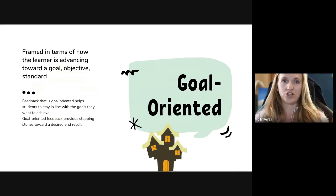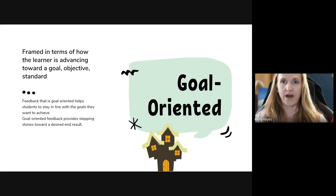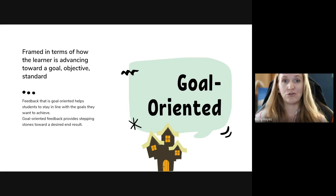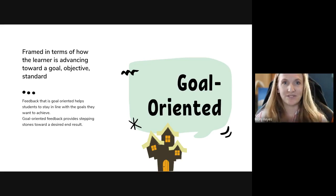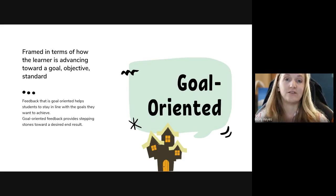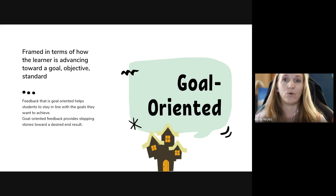The idea of goal orientation: when thinking about making our feedback goal oriented, we need to think about how we're framing it — in terms of how the learner is advancing towards a goal, objective, or standard. This can sometimes require teaching your students to set goals. Many kids in the elementary setting don't really have a strong idea of how to set their own academic goals. Even connecting to the CASEL standards and social and emotional learning, we can help students to set goals, and when providing feedback, you can reference those goals and help students see they're making gains and how they can further those gains with next steps.